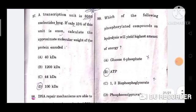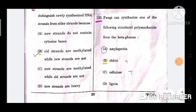Question number 99: Which of the following phosphorylated compounds on hydrolysis will yield highest amount of energy? The correct answer is option B, ATP. Question number 100: Fungi can synthesize one of the following structural polysaccharides from beta glucose. The correct answer is option B, chitin.